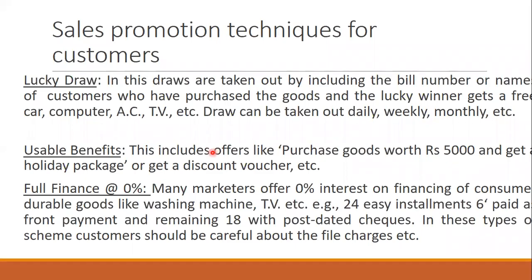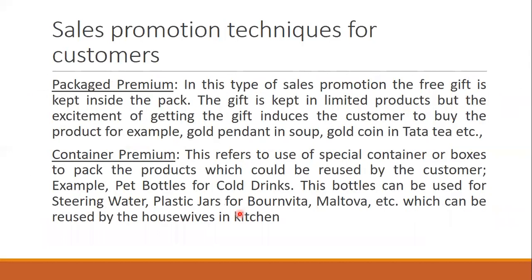Then usable benefits, like sending you on a holiday package or giving you a kitchen set or a complete new house — all of these are usable benefits. Then full finance at zero percent interest — the loan is given at zero percent, but maybe the installments will be increased or the total amount of the product might be increased.